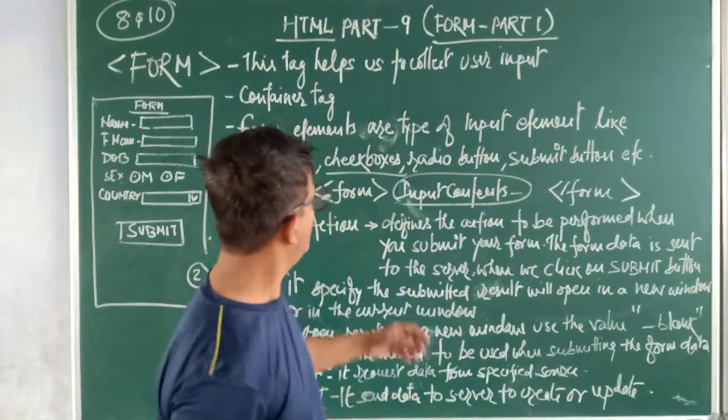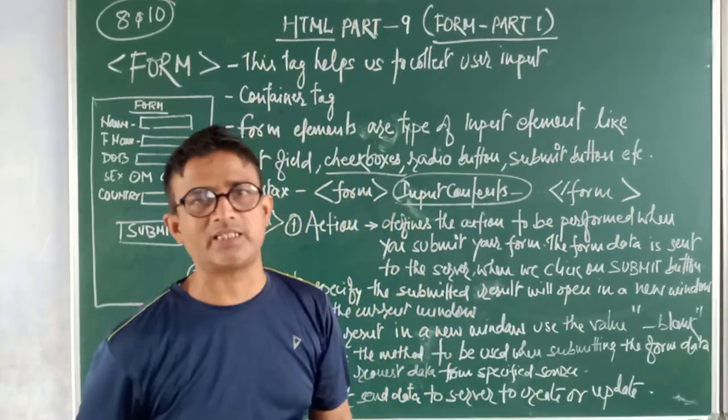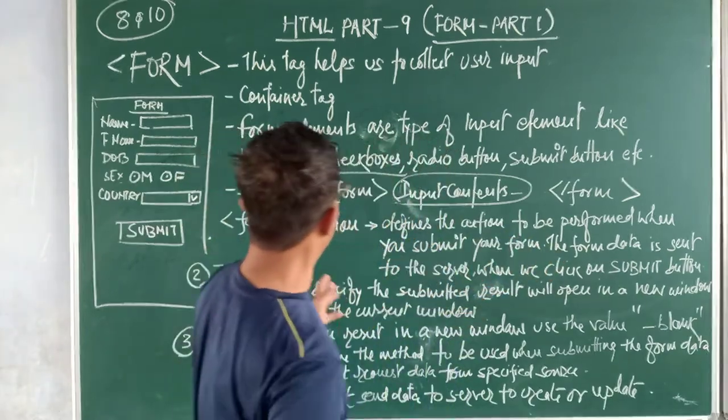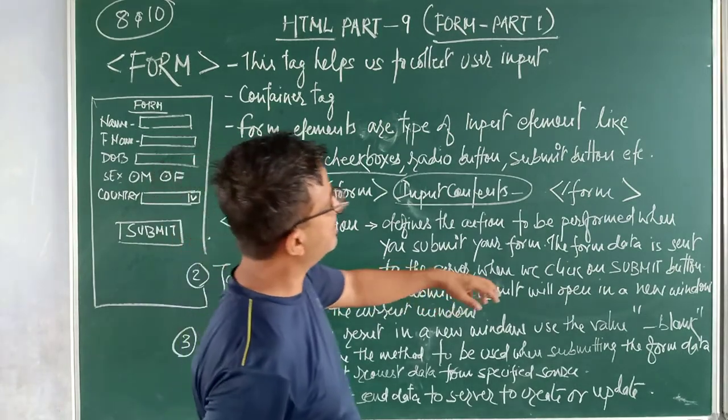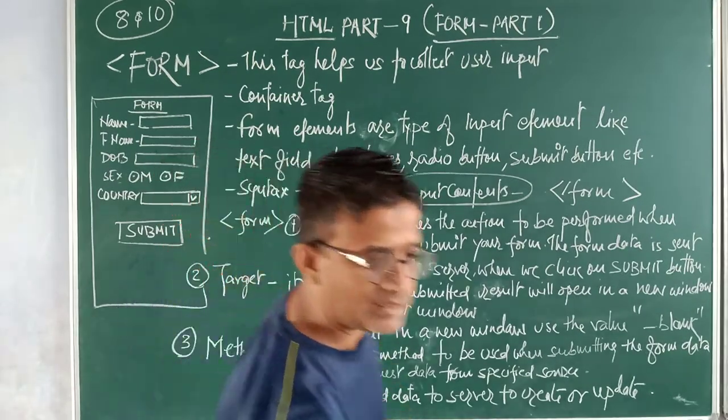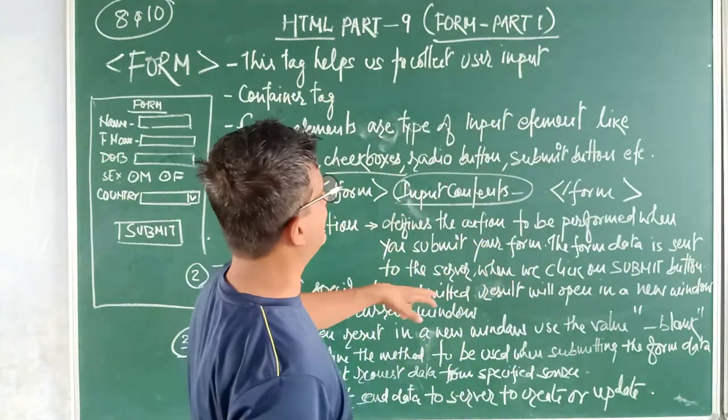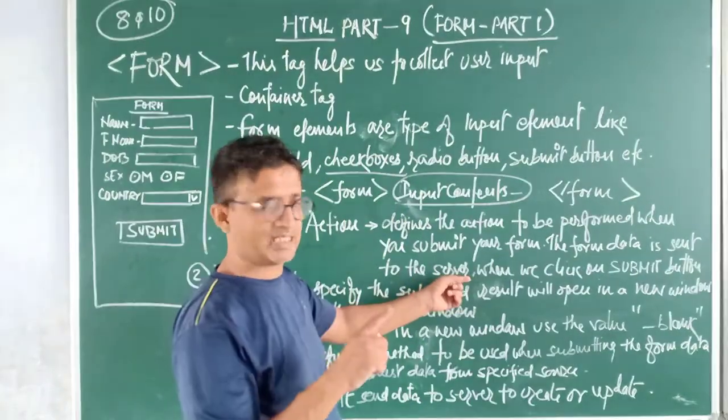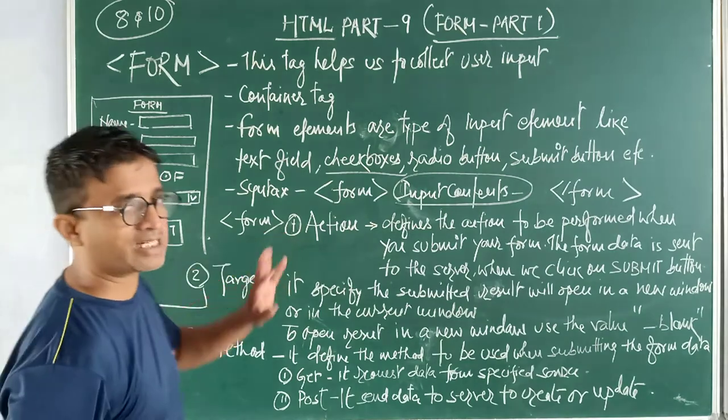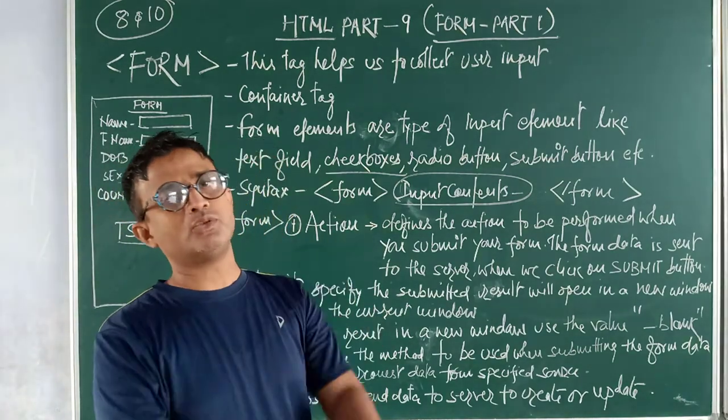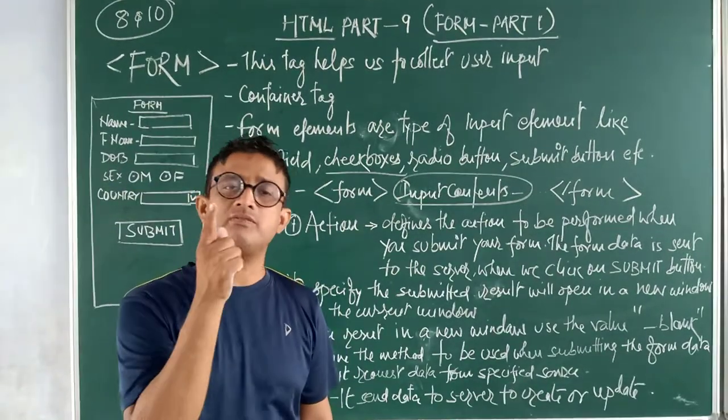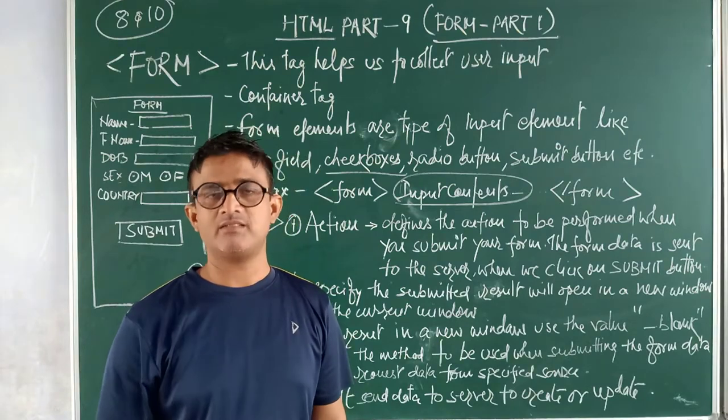What is action attribute? This action attribute defines the action to be performed when you submit your form. When you submit your form, which type of action it will take, what it will do. This is done by this action type. The form data is sent to the server. When we click on submit button, the moment you click on submit, whatever the action you will specify, your data will go to that place.